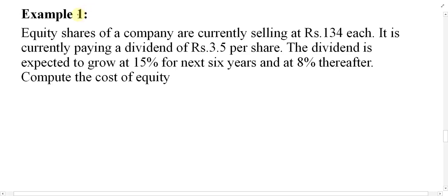Bismillahirrahmanirrahim. This is example number one for growth at different rates. Equity shares of a company are currently selling at a price of 134 each. It is currently paying a dividend of 3.5 — this is the current dividend, D0. The dividend is expected to grow at 15% for the next six years and at 8% thereafter. Calculate the cost of equity.